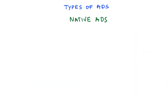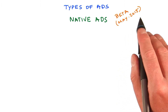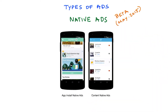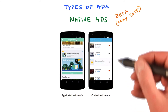Although this lesson will focus on banner and interstitial ads, there is one more ad type called native ads. As of May 2015, native ads are still in beta. Native ads give you much more freedom to customize the look and feel of the ad, using two different templates: app install native ads, which can drive app installations by advertising the app, and content native ads, which allows for a more generic combination of text and images that covers a broader scope.